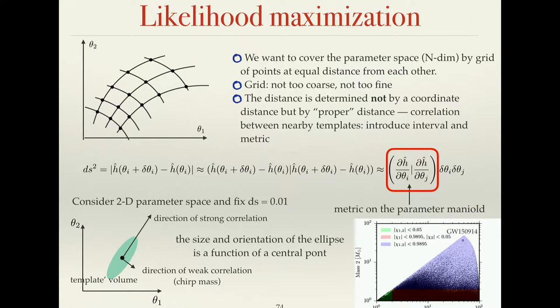This is the definition of the distance squared — basically the inner product introduced earlier. Because the deviation of the parameter is small, you can use Taylor expansion and get this result. If you compare this with the interval in geometry, you can associate it with a metric in your parameter space. You want to place templates at equal distance in this metric sense, not equal coordinate distance.